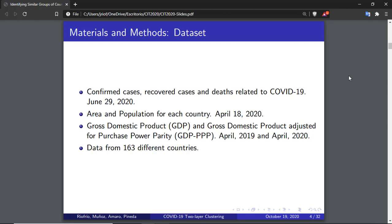The dataset contains the total number of confirmed cases, deaths, and recoveries of COVID-19 of each country. In this study, we consider the data corresponding to June 23, 2020. We also consider the area and population of each country. This data last update was done on April 18, 2020. Finally, we took into account the gross domestic product and the gross domestic product adjusted for purchase power parity, featured from the International Monetary Fund report, and last updated in April 2019 and April 2020, respectively.